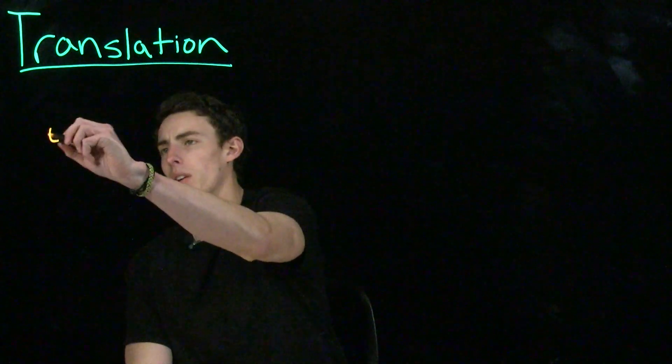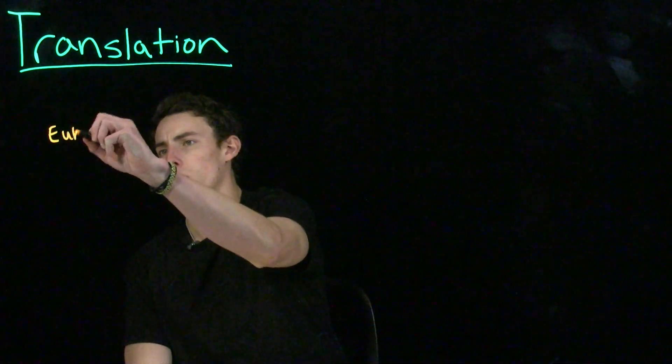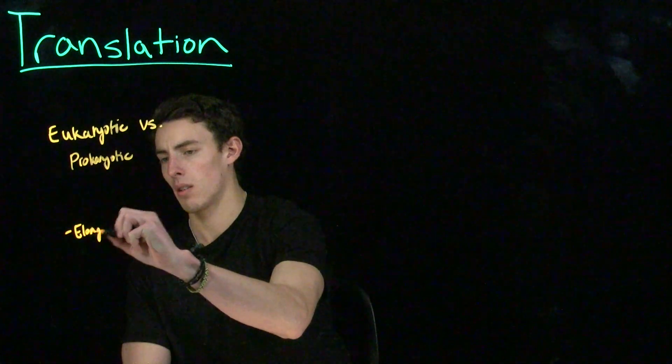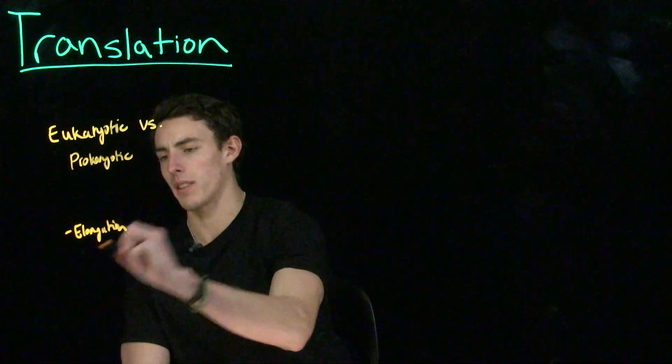Let's start by comparing eukaryotic and prokaryotic translation. Eukaryotic and prokaryotic translation really only differ in initiation. That is to say, that elongation and termination are roughly the same.